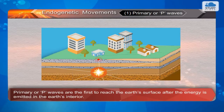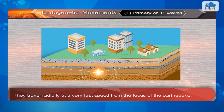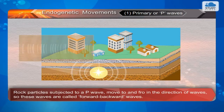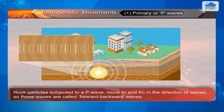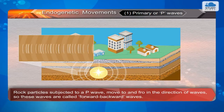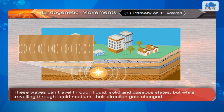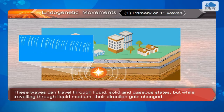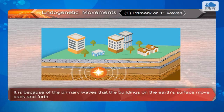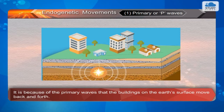Primary or P waves are the first to reach the earth's surface after the energy is emitted in the earth's interior. They travel radially at a very fast speed from the focus of the earthquake. Rock particles subjected to a P wave move to and fro in the direction of the waves, so these waves are called forward-backward waves. These waves can travel through liquid, solid, and gaseous states, but while traveling through liquid medium, their direction gets changed. It is because of the primary waves that the buildings on the earth's surface move back and forth.